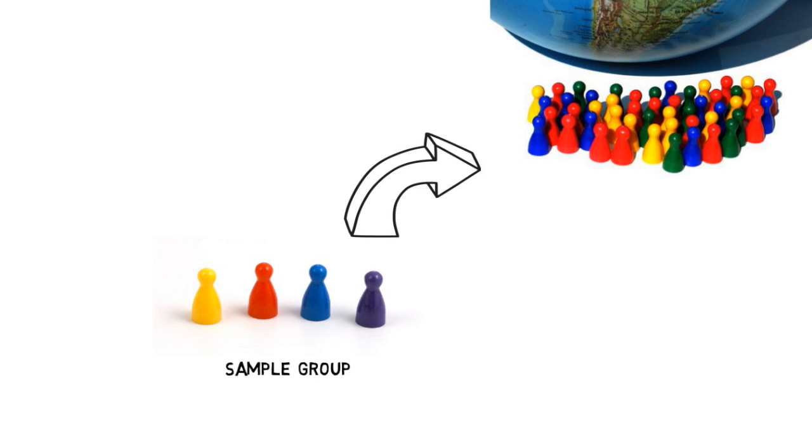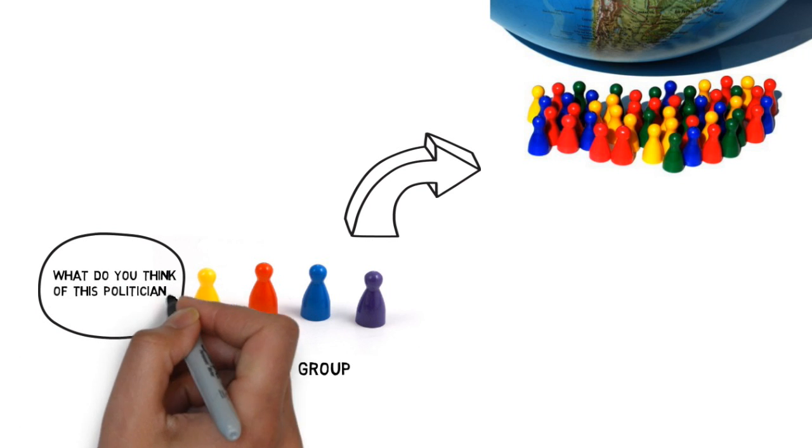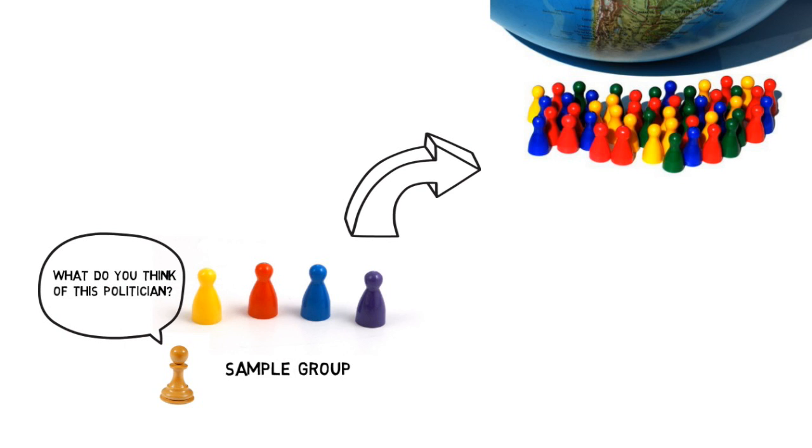A sample group is used to represent the population and they are then asked specific questions that can be measured. It is then possible to gauge who is leading in the polls and therefore more likely to win the election.